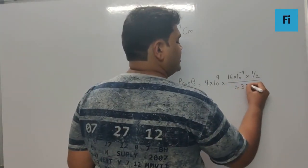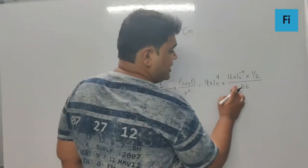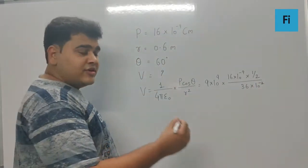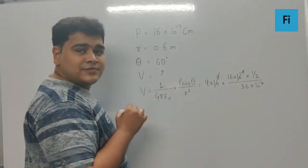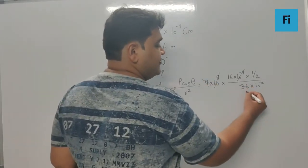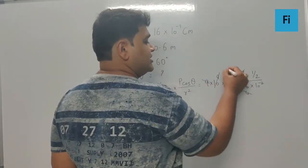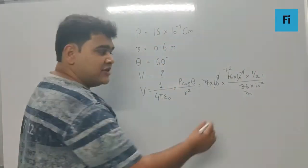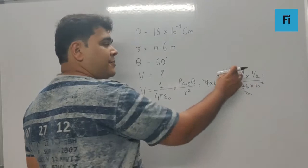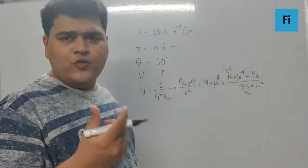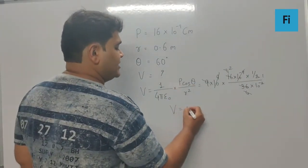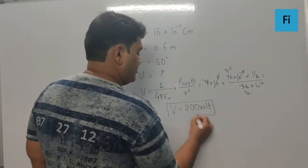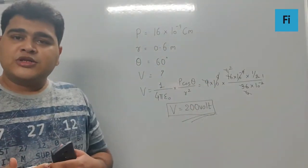The square is 0.36, which we can write as 36 × 10^-2. Now, this 10^9 and 10^-9 gets cancelled. This gives us 9, then 4, then 16, then 2. This 10^-2 when it goes up becomes 10^2, that's equivalent to 100. So 2 times 100, your final answer is going to be 200 volt.